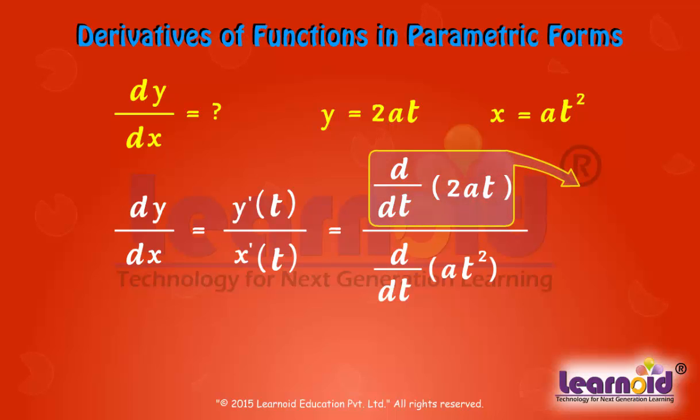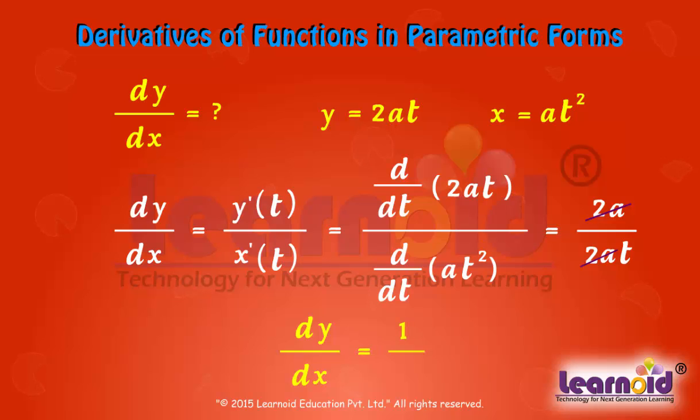d/dt of 2at equals 2a. d/dt of at squared equals 2at. So dy/dx equals 1/t.